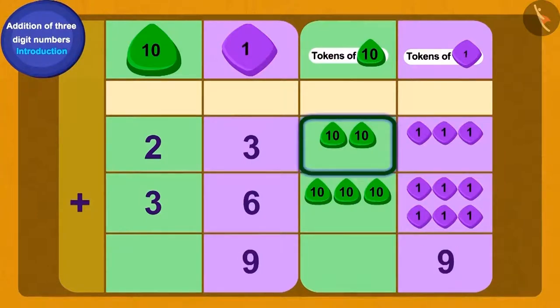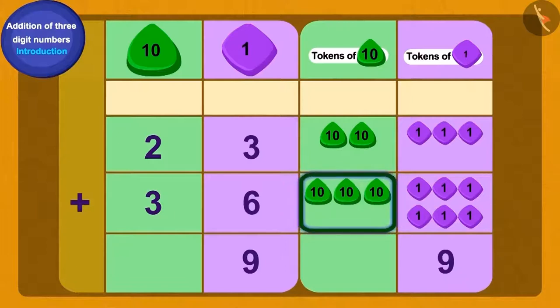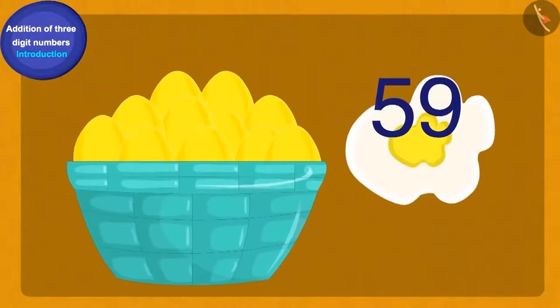Now if we add two ten tokens and three ten tokens, how many do we get? Perfect! Five of ten tokens. Thus, Baban had a total of fifty-nine gold eggs.